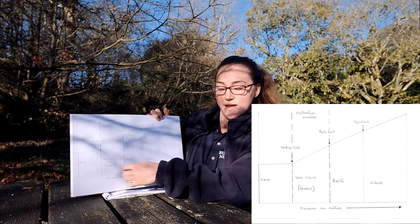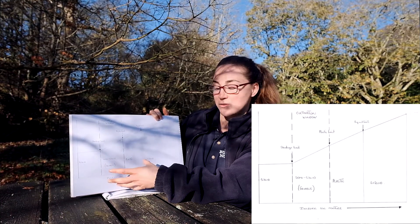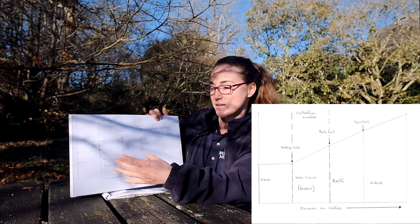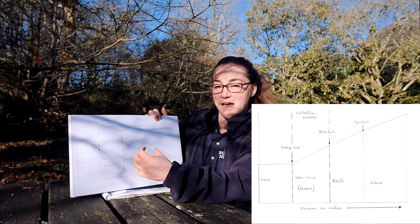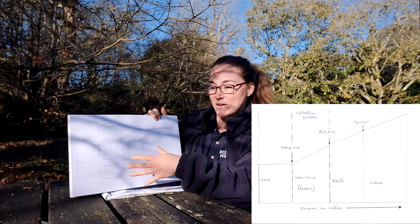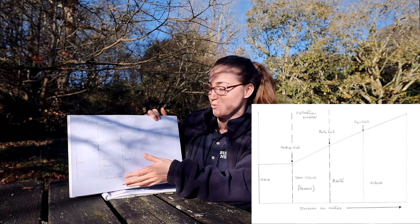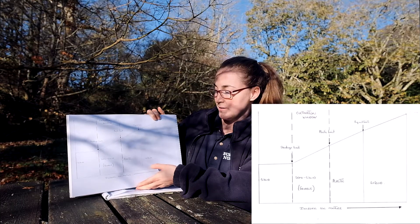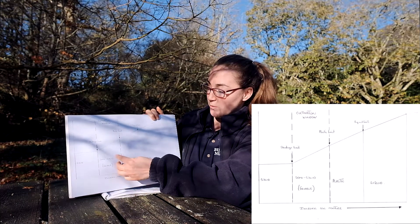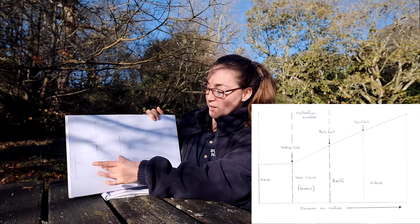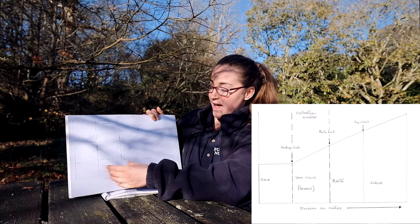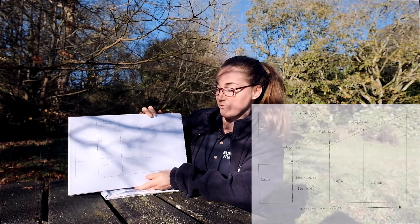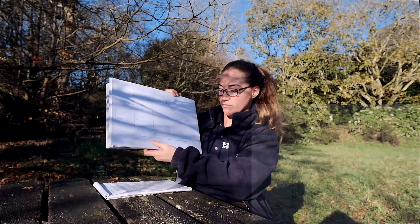This is the point where the soil is friable, so you can break it up into nice smaller aggregates, which is ideal for planting seeds and small plants. With a heavy soil this is a much smaller window, and in a lighter soil you've got a much bigger timeframe in which you can cultivate it.